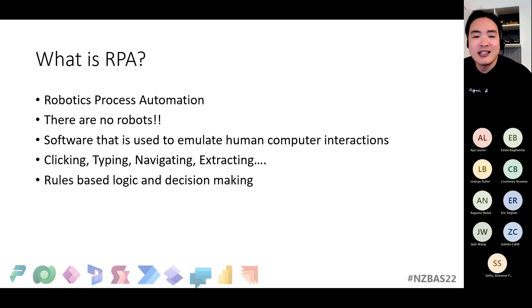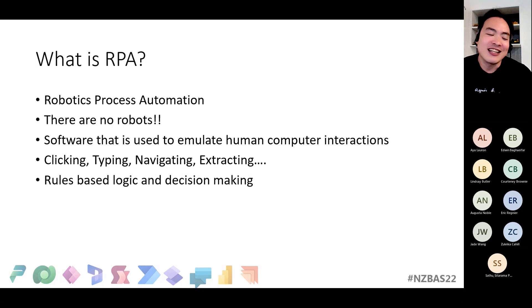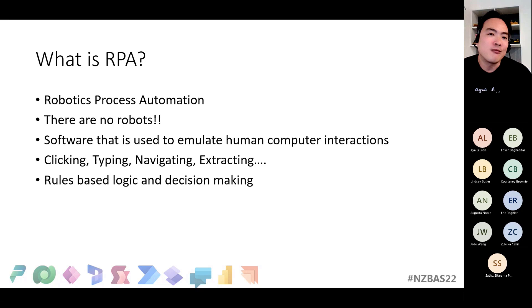The way I like to think about it is: if you can document a process and give it to someone completely new, they should be able to follow the steps and get the same outcome. If it requires experience or luck, it's probably not a good candidate for automation. You can now infuse AI and machine learning, but for the most part, RPA is still quite rules-based. And it's been around for over a decade.